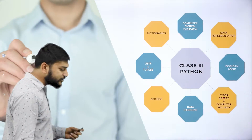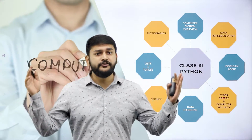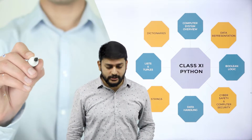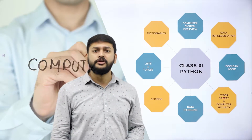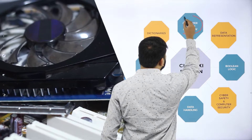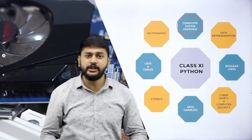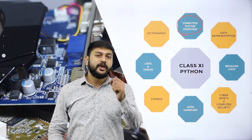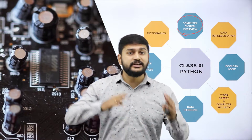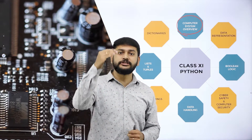Moving on to the next one — learning outcomes. You will learn a lot of things. First, you will learn about computer system overview: the basics of a computer system, typical configuration, what are input devices, what are output devices, what are the different operating systems, and what are the different logic gates. All that information you will learn in this topic.